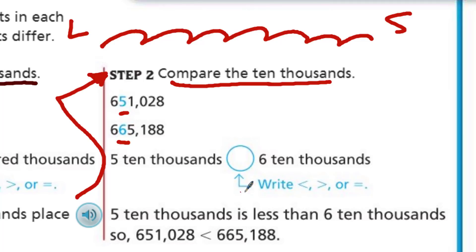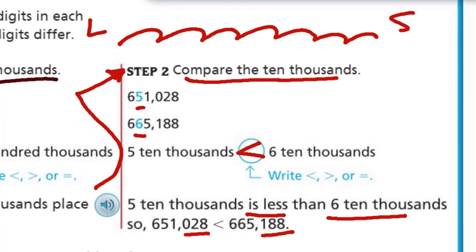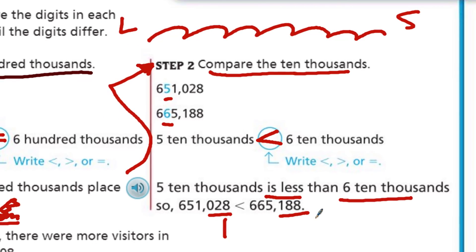Now, we're supposed to compare the 10,000s. And you can see we have a six here, we have a five here. Because it's the largest. We always want to move from the greatest to the least. Five ten thousands is less than six ten thousands. So, therefore, 651,028 is less than 665,188. And just because this number here may look larger, that doesn't matter. These are smaller place value positions.